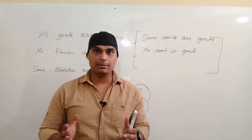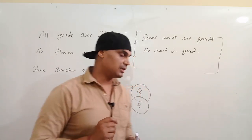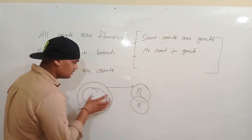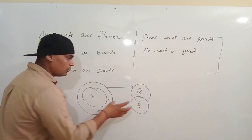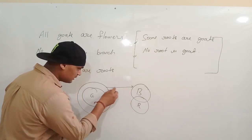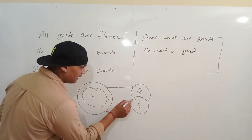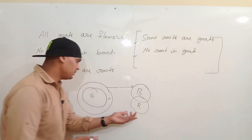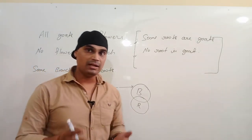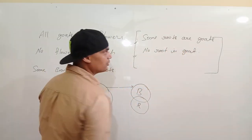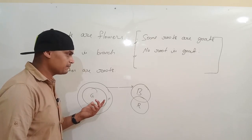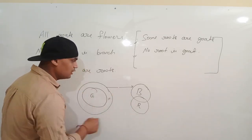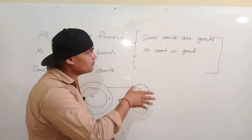Ab ek important baat samajh lijiye — isme poora concept chhipa hua hai. In dono ka relation hai: kuch branches jo hain wo roots hain. Lekin yaad rakho, B ka connection G aur F ke saath nahi hai. R (roots) ka to R ka connection B ke saath rahega, lekin uska kuch hissa F tak bhi aa sakta hai — ye possibilities hain, kyunki R ke baare mein kuch nahi kaha gaya. Sirf ye bataya hai ki B ka relation R ke saath hai.